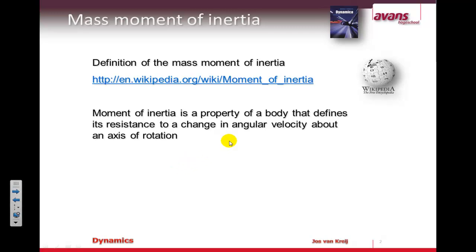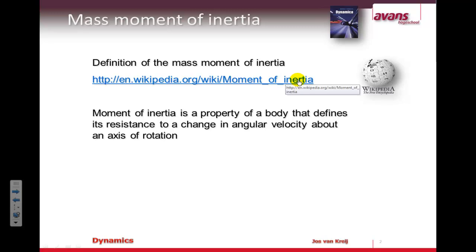I'm not going to discuss the full background of the mass moment of inertia. If you want to refresh your memory about that, or if you want to have a look at what the mass moment of inertia exactly is, you can check it up in a lot of books. The easiest way to find some background information is to look on the Wikipedia site. For now I'm going to just state that the mass moment of inertia is a measure of how much resistance a mass will have against a moment for starting an angular acceleration.